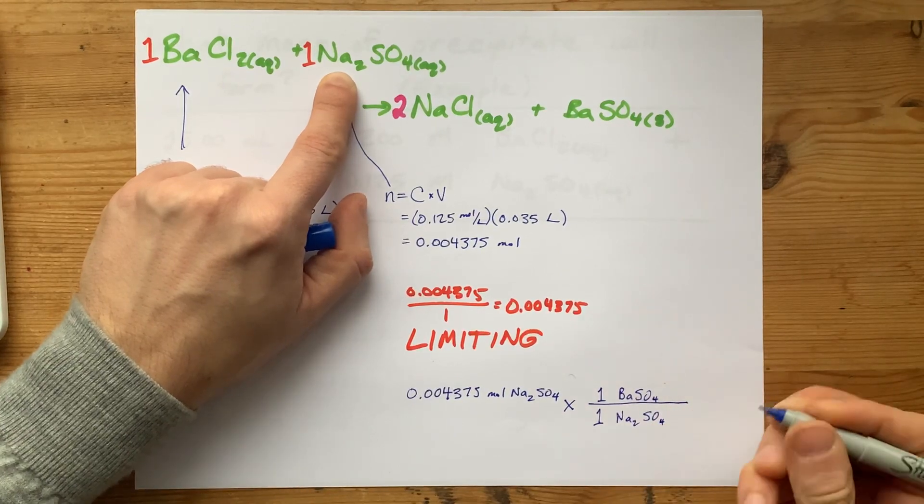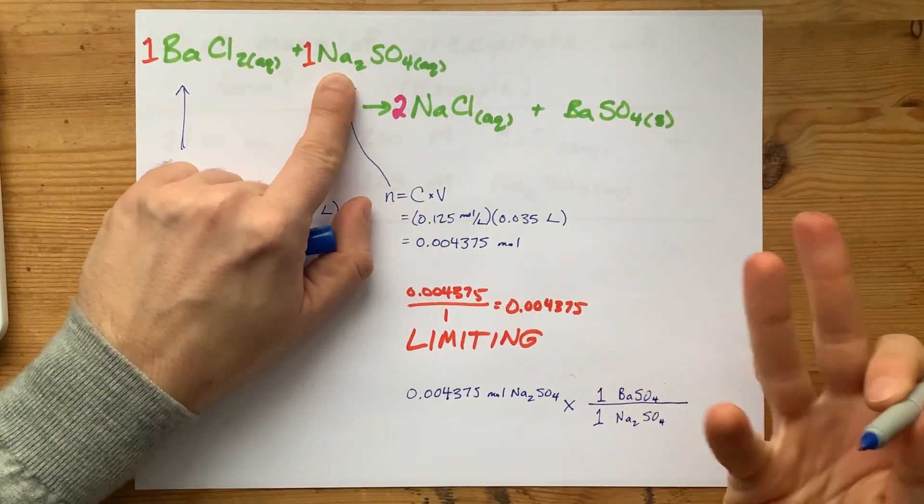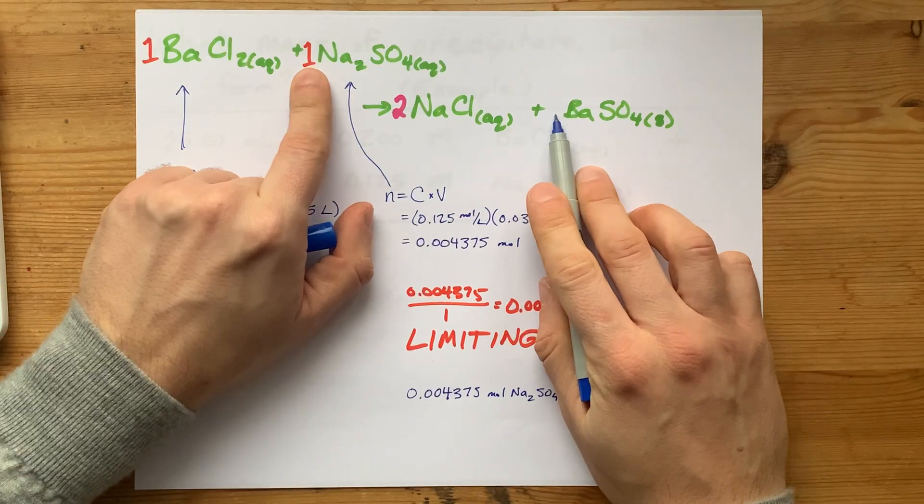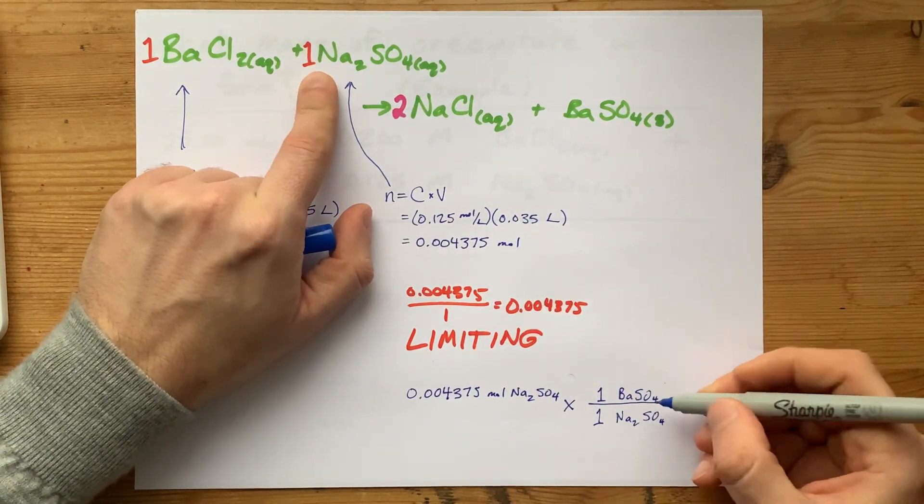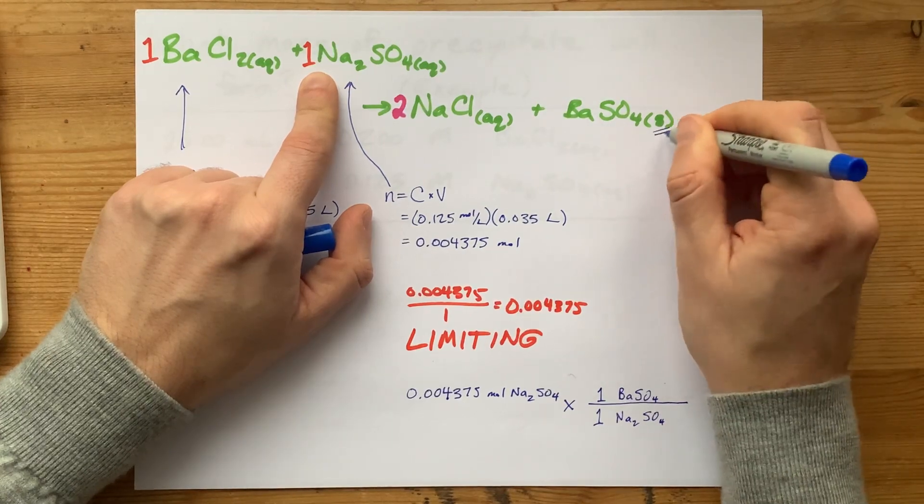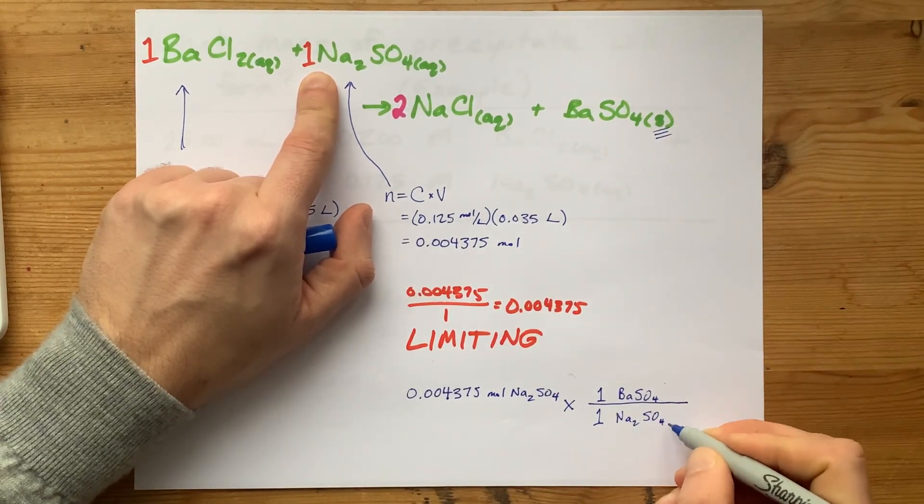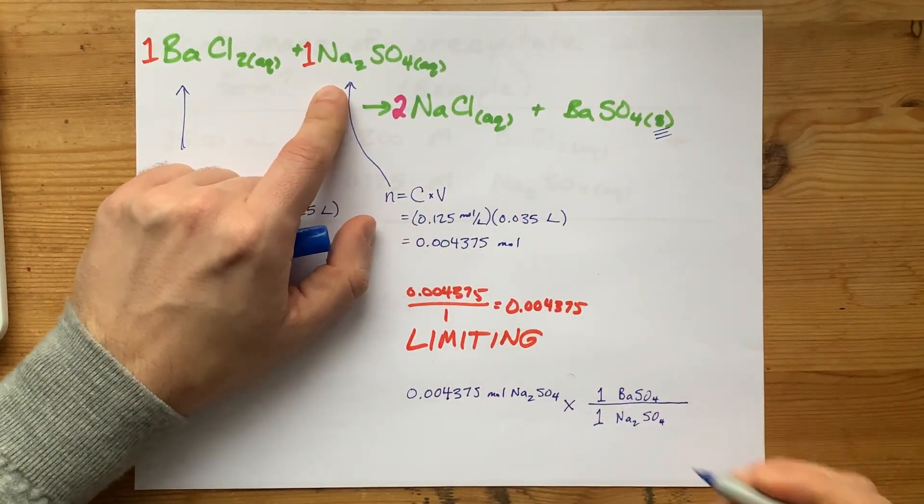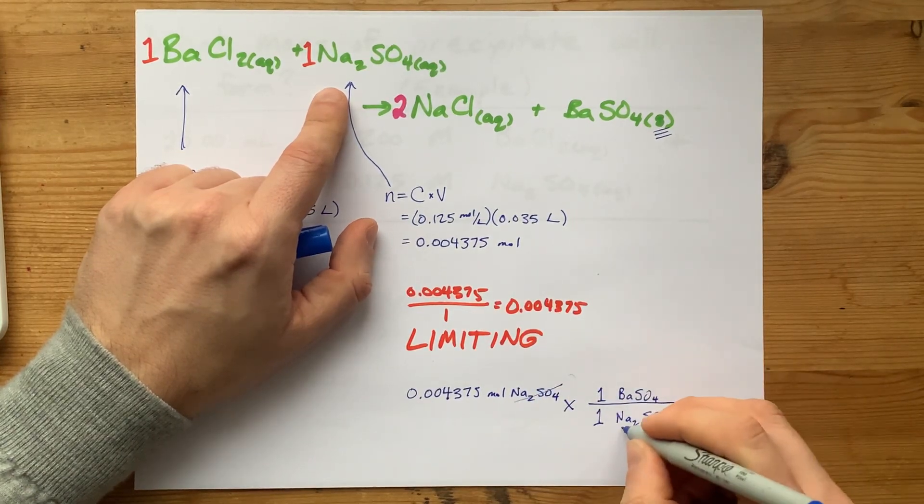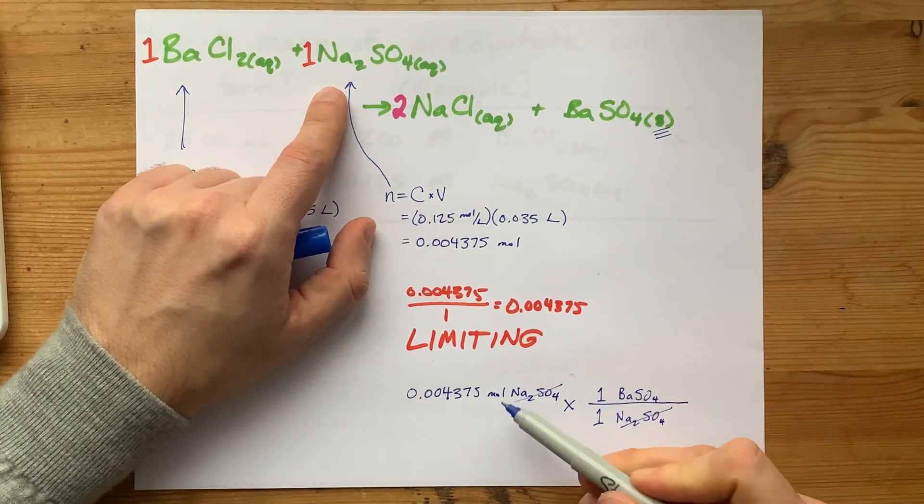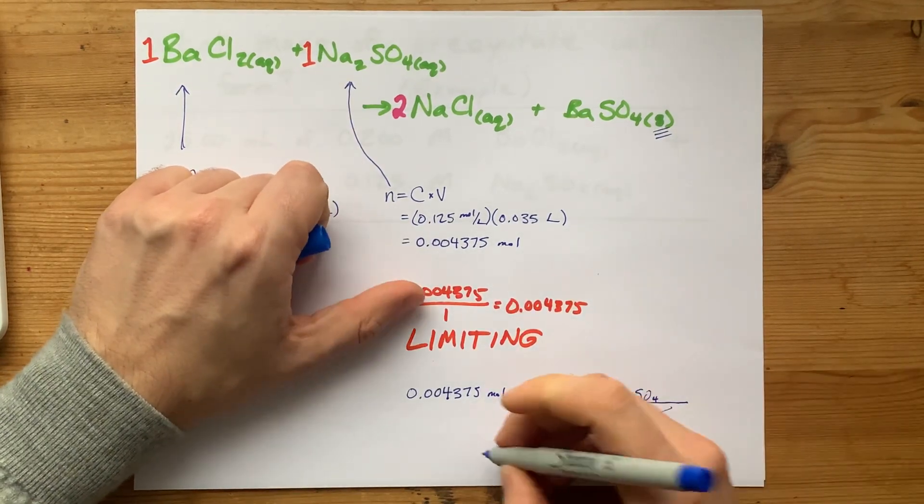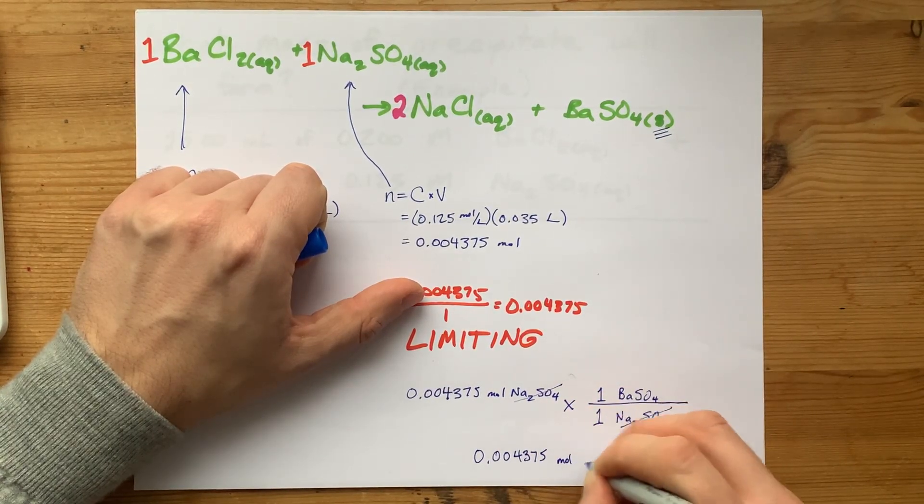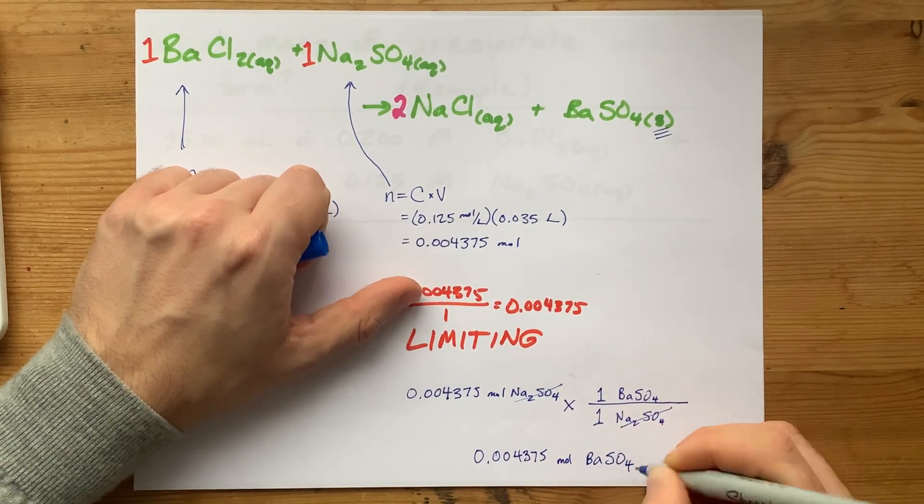And I am trading one BaSO4 for each one of the Na2SO4s. I realize this example is not ideal because I have so many ones. It's the one that I found when I googled it. The point is that whatever these coefficients are in your balanced chemical equation, those are the ones you're going to have to use here. I'm putting BaSO4 on the top because it's the solid, by the way. And I'm putting Na2SO4 on the bottom because it was the limiting reactant the whole time. When I do that multiplication, I always think about how the Na2SO4s cancel out. And I'm going to be left with moles of BaSO4, which is exactly what I'm being asked to find. 0.004375 moles of BaSO4 has formed.